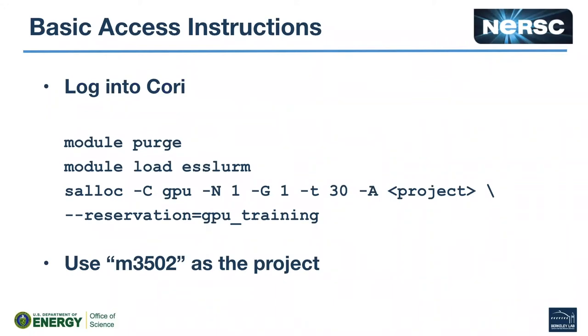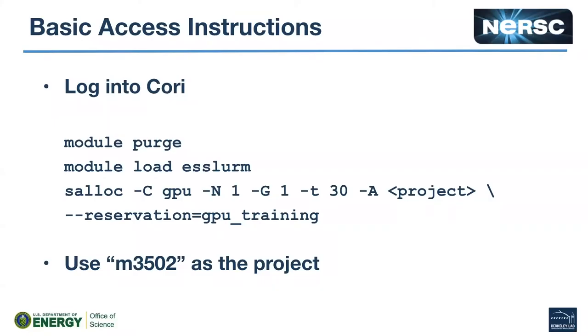The most basic thing we'll do — I'll go through another couple of slides and then leave 10 to 15 minutes for everyone to do this — is to get onto the GPU nodes. You'll first want to log into Cori, and then we generally recommend doing a module purge, which gets rid of all the module files loaded by default. This is because the Cori GPU nodes have a different operating system and a slightly different software environment than the Haswell and KNL nodes, so the vast majority of standard Cori software will not work on the GPU nodes. The standard approach is to purge all the modules and then load only the ones you'll need: CUDA, GCC, et cetera.